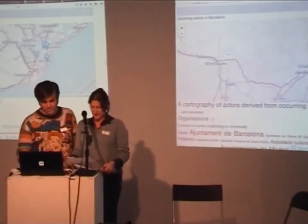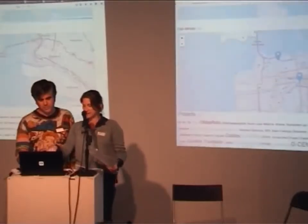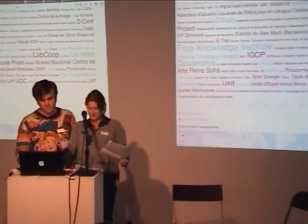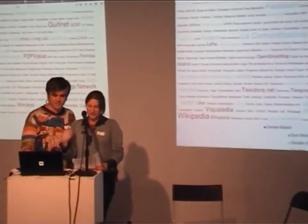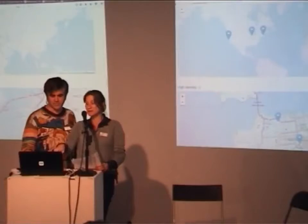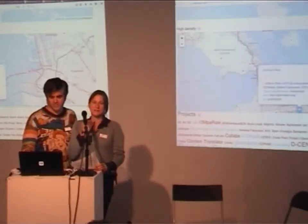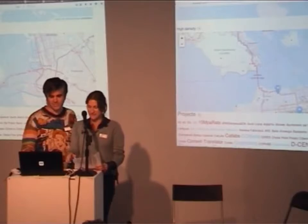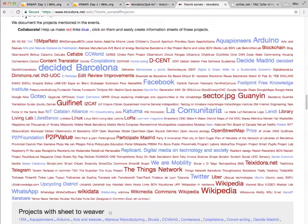A cartography of actors: people and organizations, listed by alphabetical order, then the organizations' headquarters. We can see that in San Francisco, for example, organizations being mentioned in events in Barcelona are all on the same street — and they probably have breakfast together. And also projects.